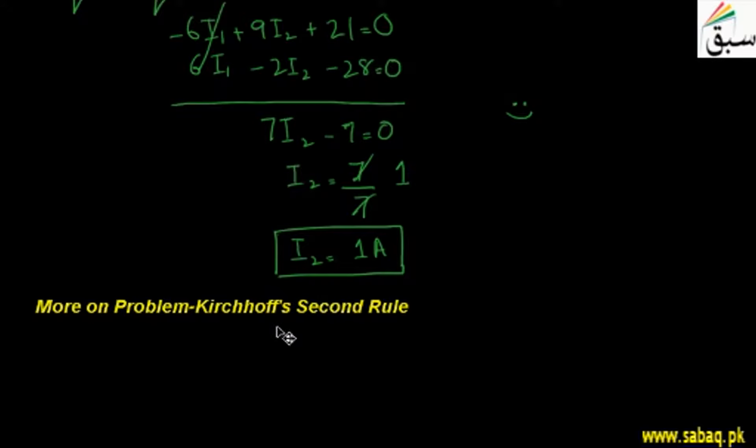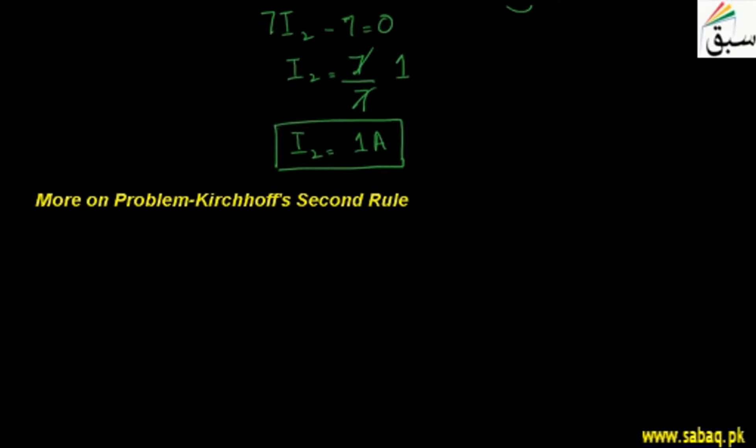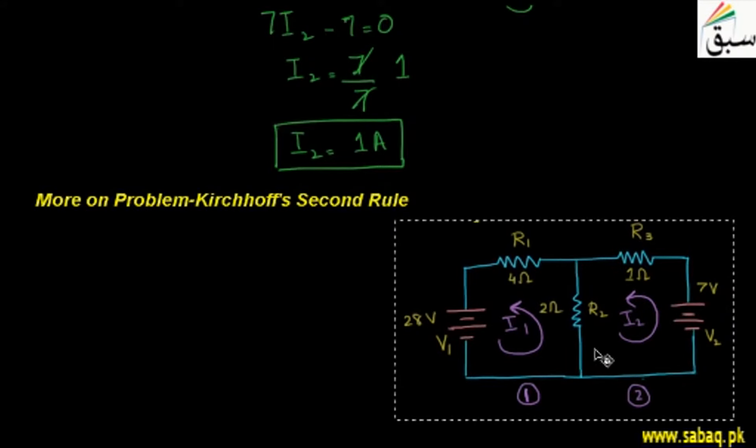In the first part of this problem, we discussed the whole solution. We have solved the current I2, which we found. We have determined its value. So here I will put the circuit diagram again so that it will be easy for us to solve further.